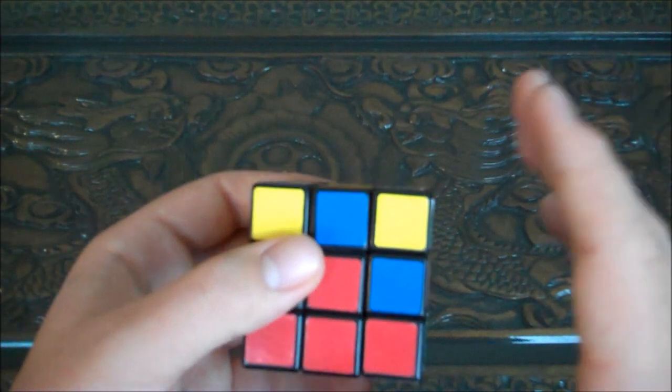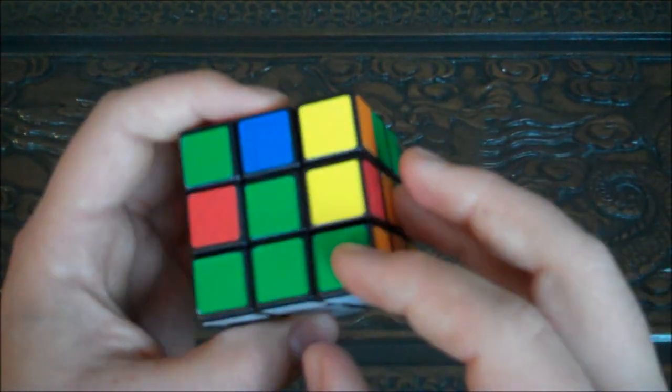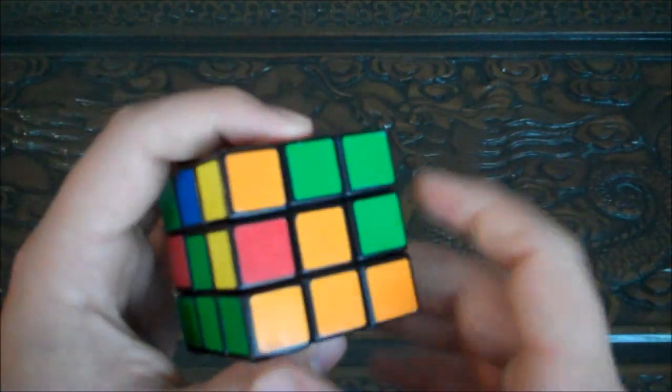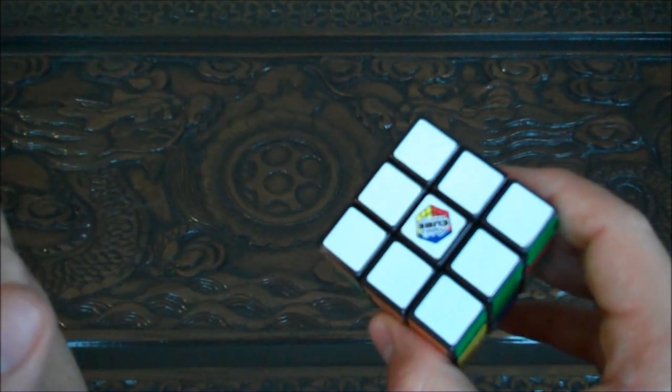Now, this is the end of the first part, because we've got the bottom tier is all the same, matching its face, and the bottom face is completely done. So that is the first bit of Rubik's Cube.